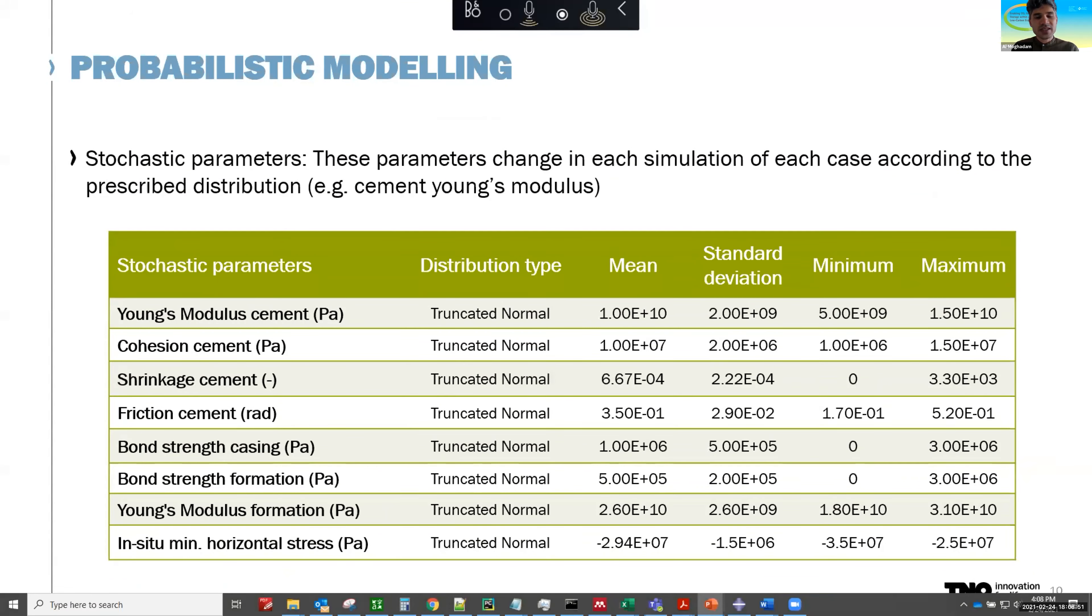So finally we did a sensitivity analysis to see what parameters matter the most in terms of their uncertainty impacting the results. So we narrow it down to eight parameters here that we treat stochastically. So here we have, for example, cement Young's modulus. It's a very important parameter. You might know on average what it should be, but there is a large uncertainty here. So for every case, for every simulation, these eight parameters are randomly selected based on this particular distribution type, based on this mean and standard deviation. The formation the same way, it's rather uncertain. The in-situ minimum horizontal stress is uncertain, the bond strength in casing and cement, some other cement properties, for example.